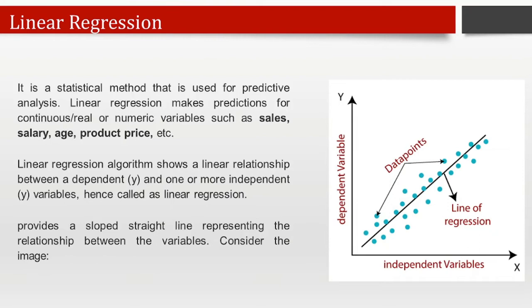Linear regression algorithm shows a linear relationship between a dependent and one or more independent variables, hence called linear regression. Since it shows the linear relationship, it finds how the value of the dependent variable is changing according to the value of the independent variable. The linear regression model provides a straight line presenting the relationship between the variables.